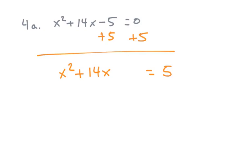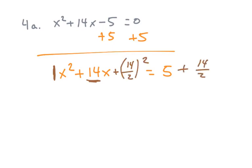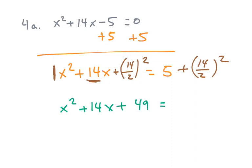You have to remember when you complete the square you need a leading coefficient of one, which is the case here. We take this 14, we divide by two and square it. So we're going to add 14 over two squared, and what you add to one side of the equation you have to add to the other. So this becomes x squared plus 14x — 14 divided by two is seven, seven squared is 49. So it's five plus 49.